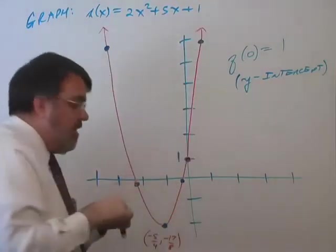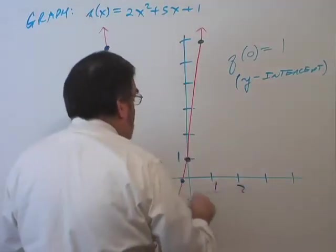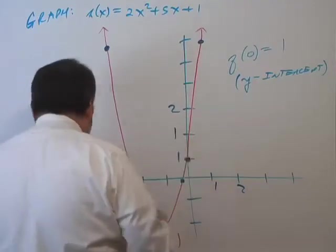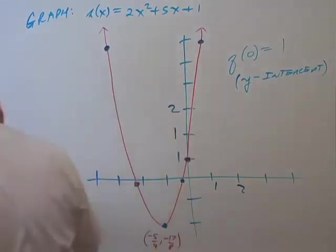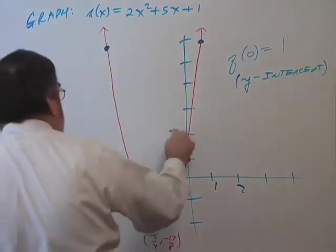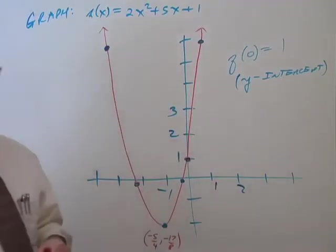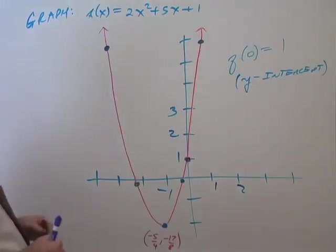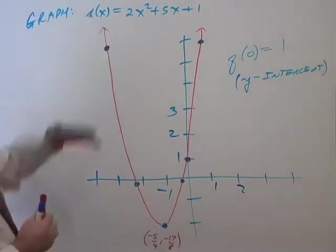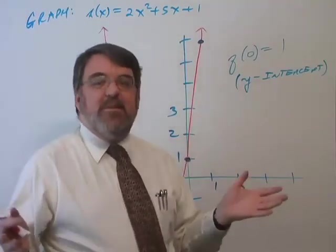Now, the only thing that's missing are the scale numbers. So, we need some scale numbers. Oops, wrong scale numbers. 2 and 3. That way your reader knows what scale you're using. Now, we're done. We graphed y equals 2x squared plus 5x plus 1. Alright, that was kind of a rough one to start off with. So, let's do another one.